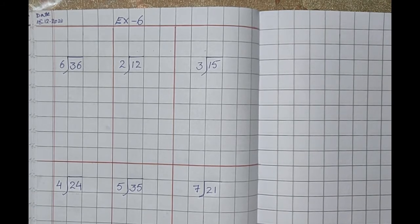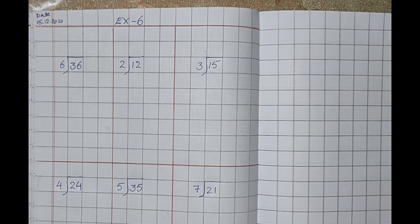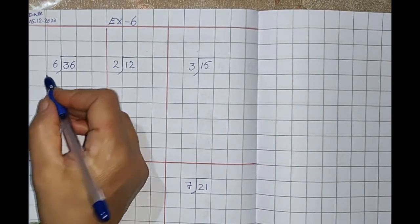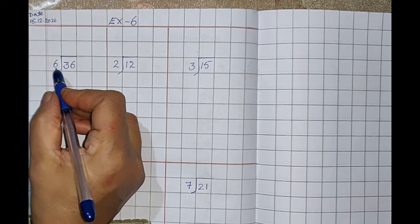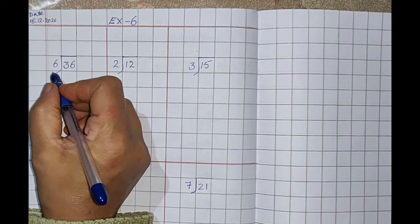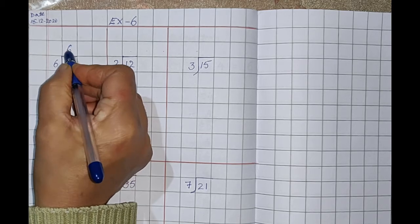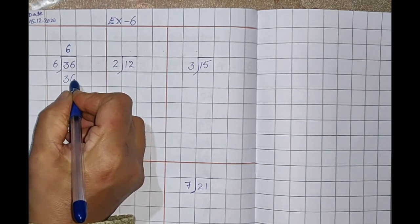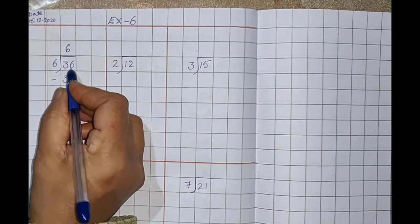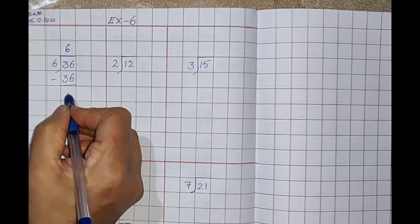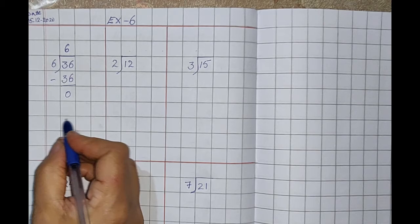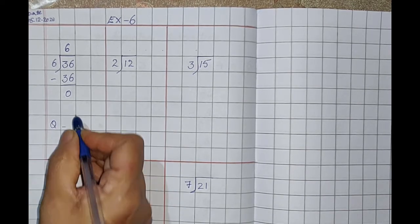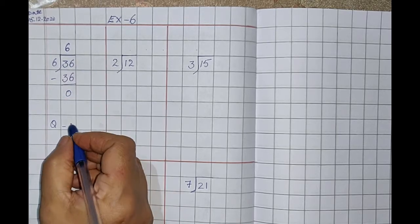Now, children, we are doing division sums — one-step sums in our classwork. Here, 36 divided by 6: read the table of 6, 6 sixes are 36. Write 36 in the box, subtract — 36 minus 36 is 0. Your quotient — you can write short form Q — is 6.